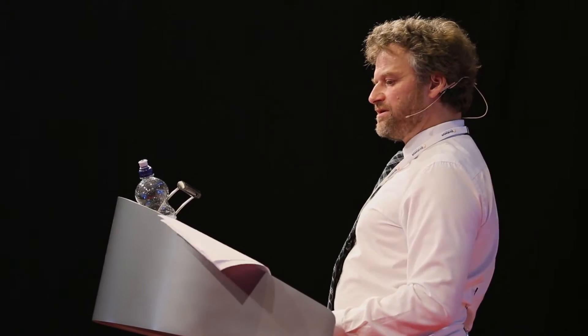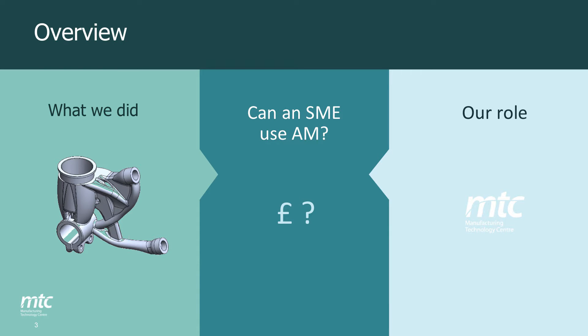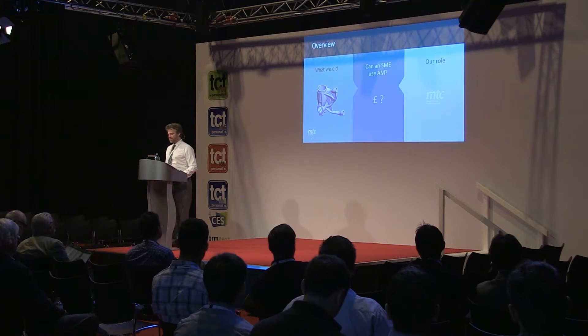The project with the two SMEs was based around an additive manufacturing process called selective laser melting. For those unfamiliar, it's similar to 3D printing in that components are produced on a layer-by-layer basis. Selective laser melting uses a metal powder as a raw material, consolidated into geometry using a laser to melt it. The workflow discussed broadly applies to any of these additive manufacturing processes with small variations.